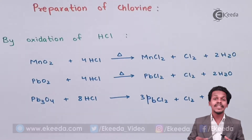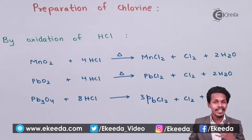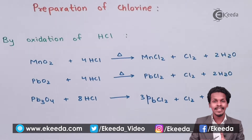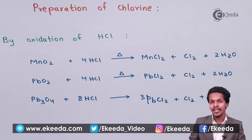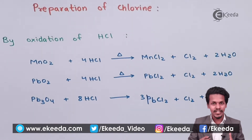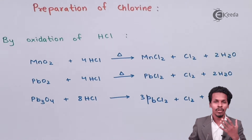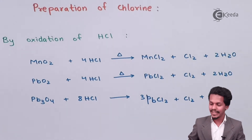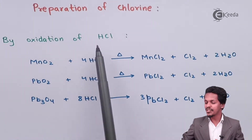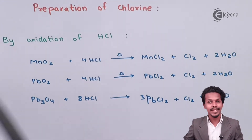So friends, this is the topic where we are going to talk about the preparation of chlorine and let us understand how we can obtain chlorine. There are various methods from which we can obtain chlorine, and I am talking about the first one — that is by oxidation of HCl.